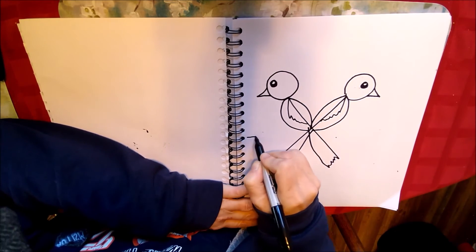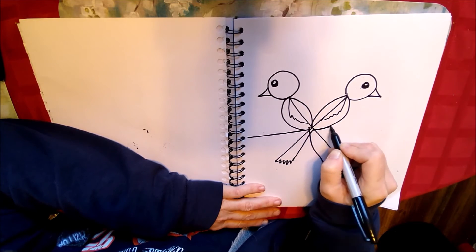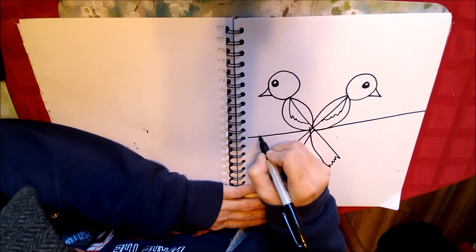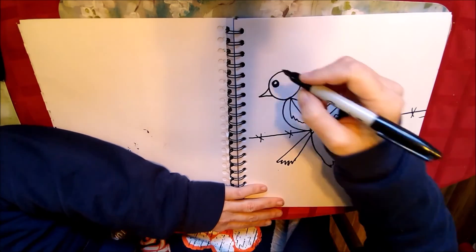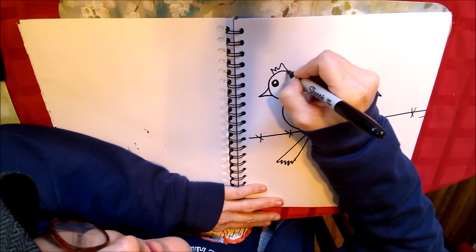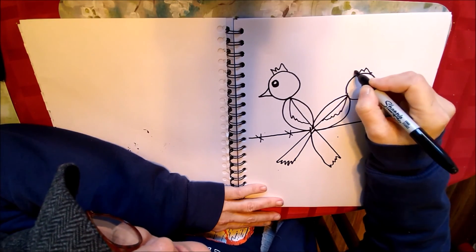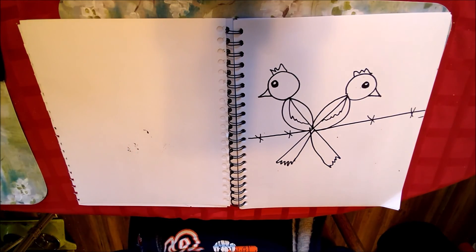And let's put them on a utility pole. Here we go. And there we have, and we can even give them some feathers up here. We have our two little lovebirds. All right, guys.